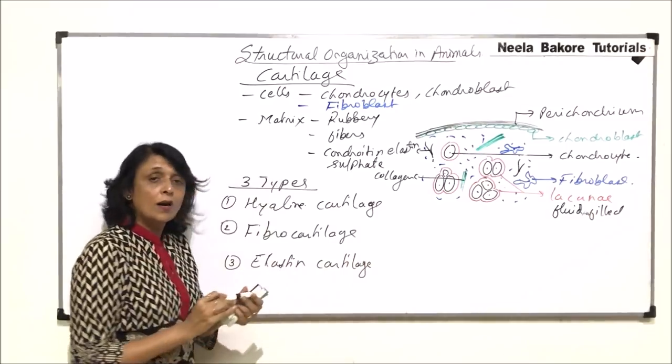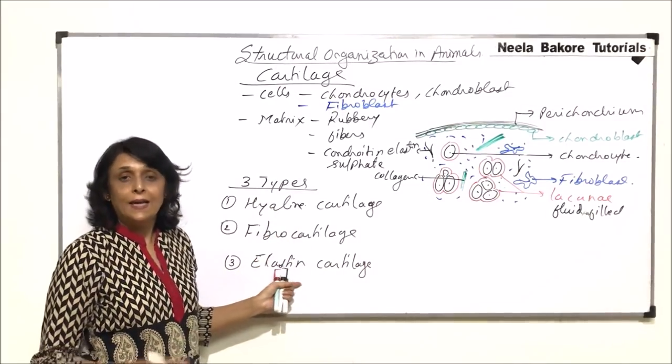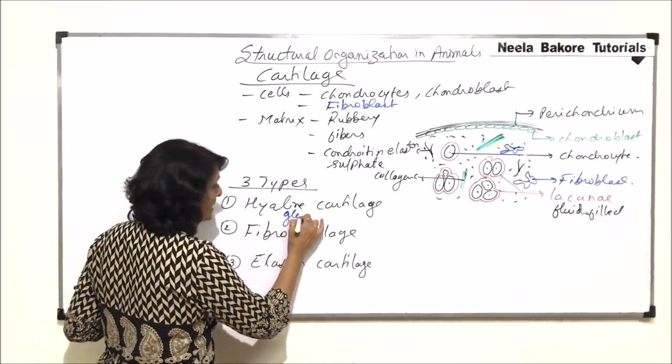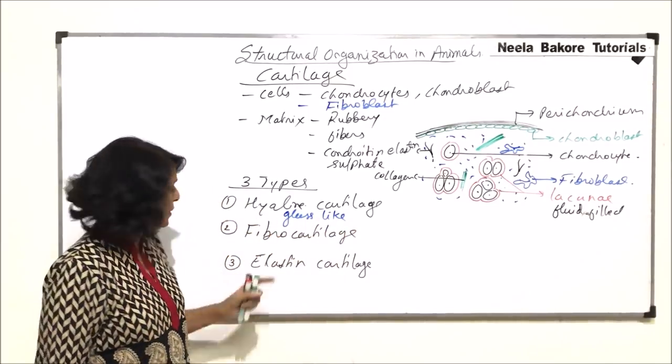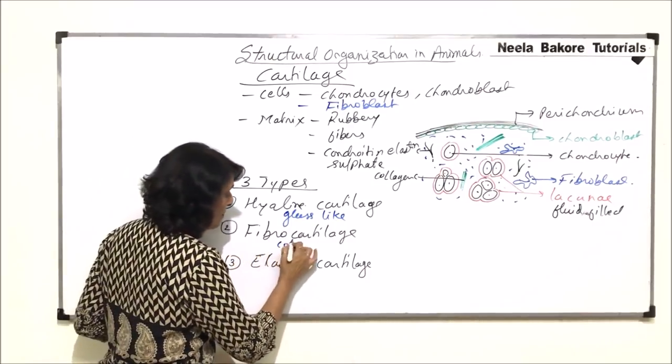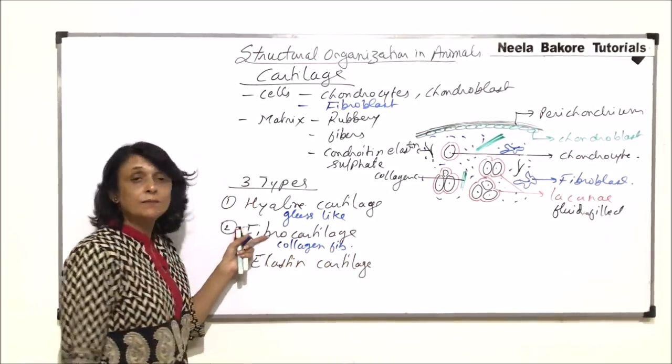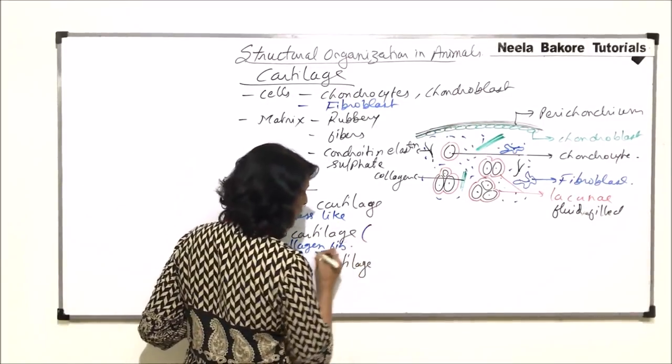What exactly is hyaline cartilage? It is glass-like, more or less translucent, with no fibers. Fibrocartilage is tough, has mainly collagen fibers, and is sometimes known as white fibrous cartilage because of the presence of collagen.